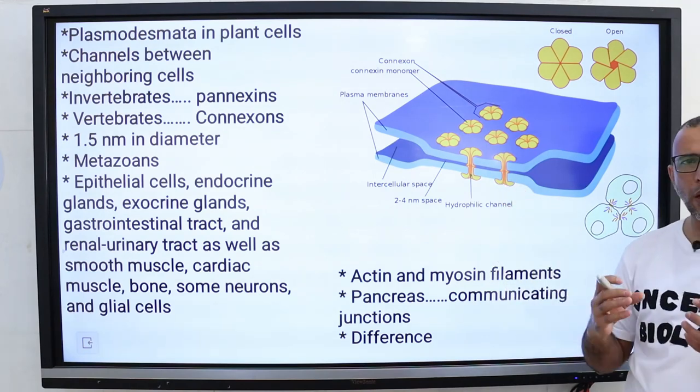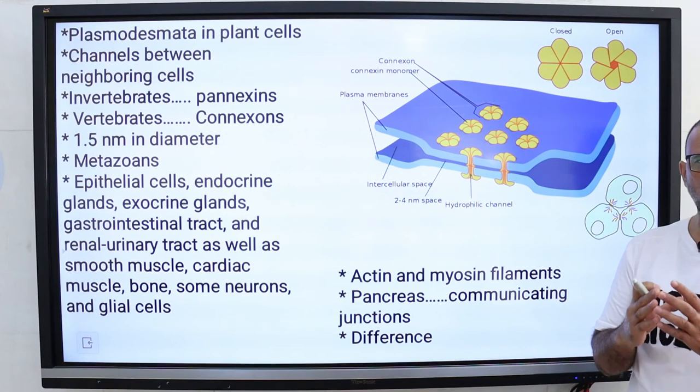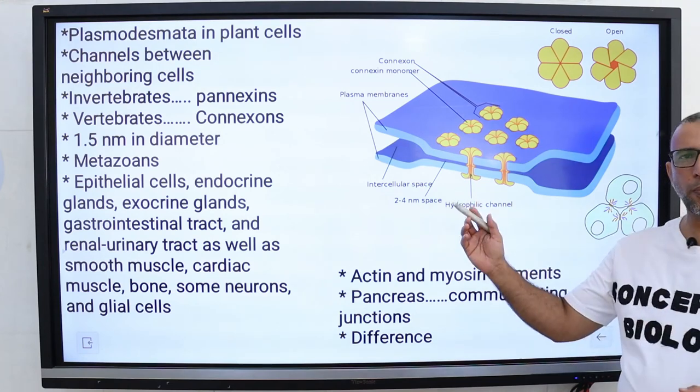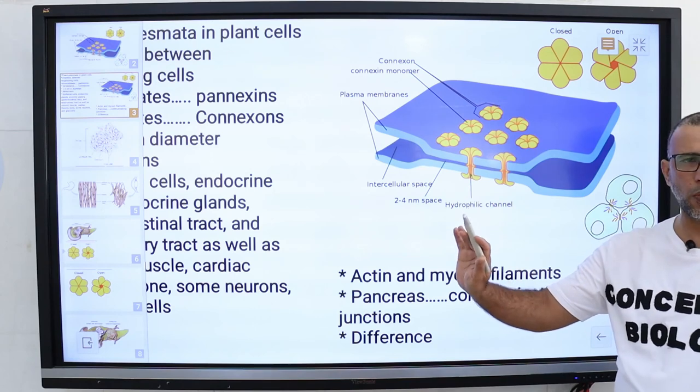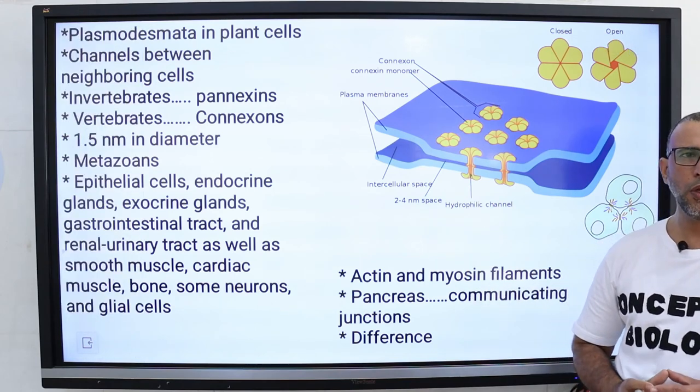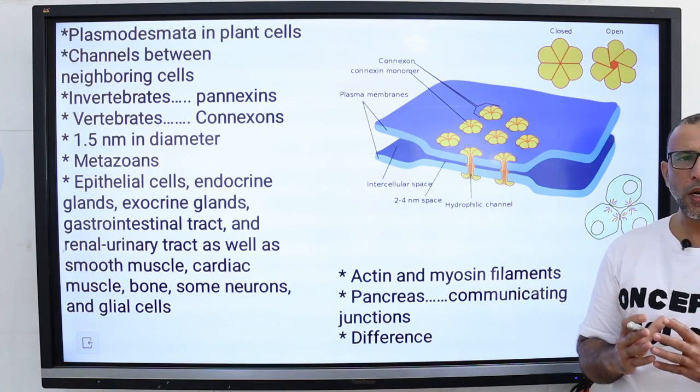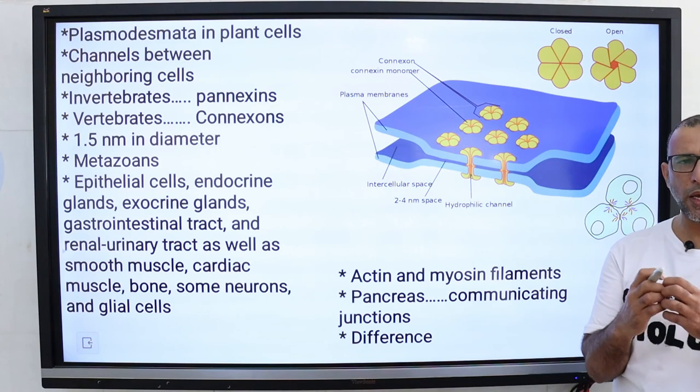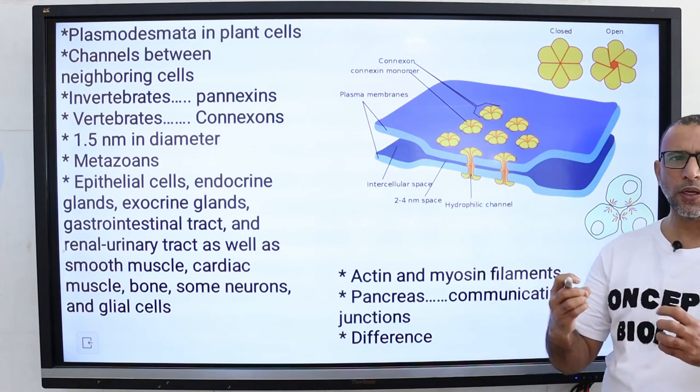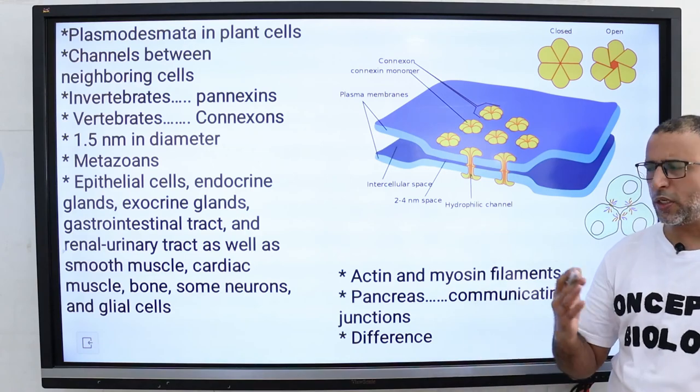Ion channels allow the flow of ions in and out of the cell depending on electrochemical gradient. Most ion channels are specific for ions only, for example potassium ions. They do not allow the flow of molecules. Ion channels do not connect two cells directly. An ion channel enables the rapid flow of ions from extracellular to intracellular space and vice versa.